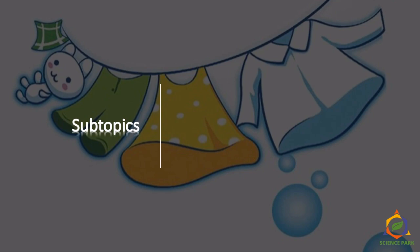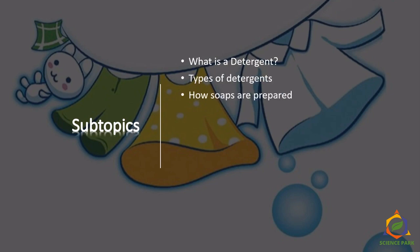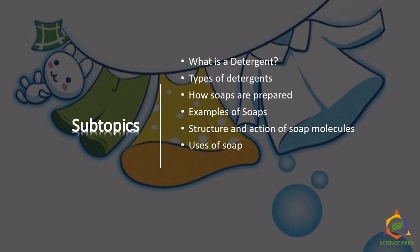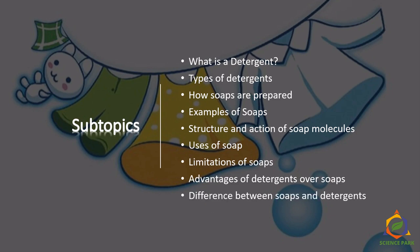Sub-topics that I will be covering in this video are: first, what are detergents; then types of detergents and how soaps are prepared; then examples of soaps, structure of a soap molecule, and action of a soap molecule; then uses of soap; limitations of soaps; advantages of detergents over soaps; and finally the difference between soaps and detergents.